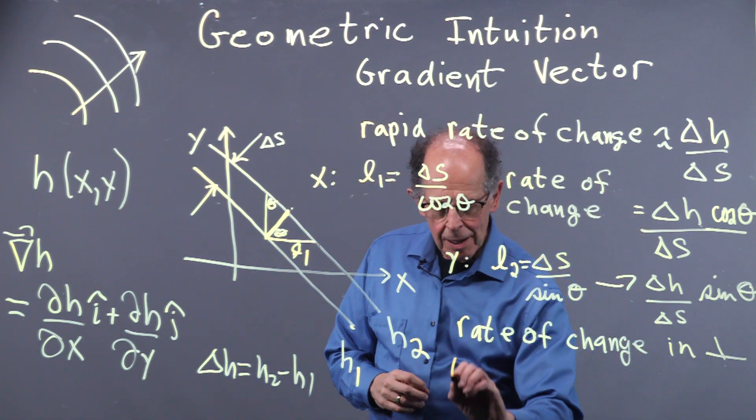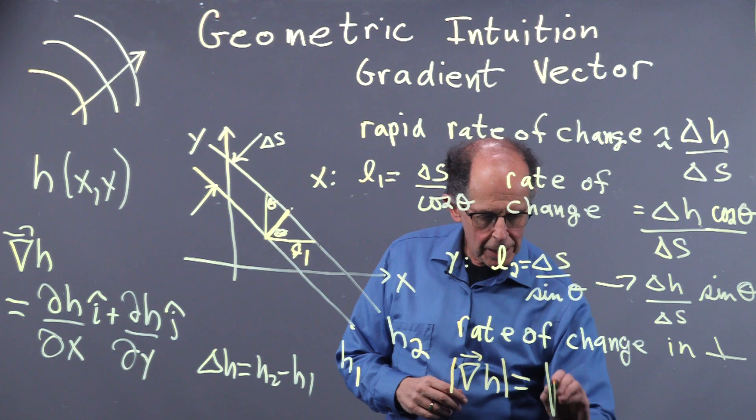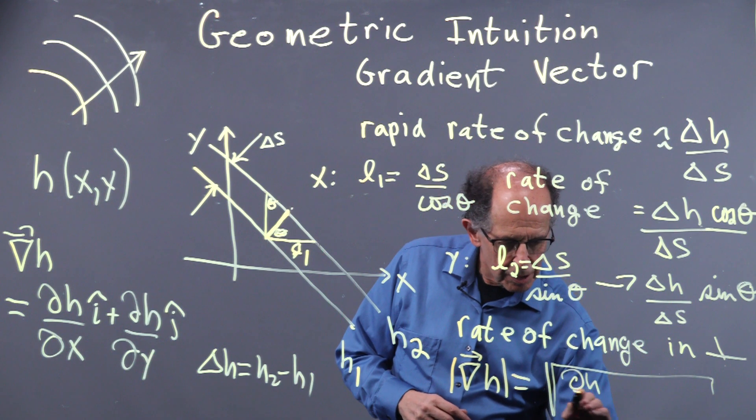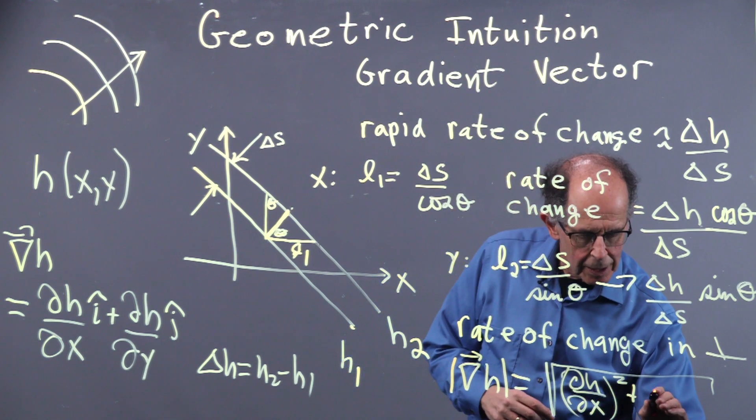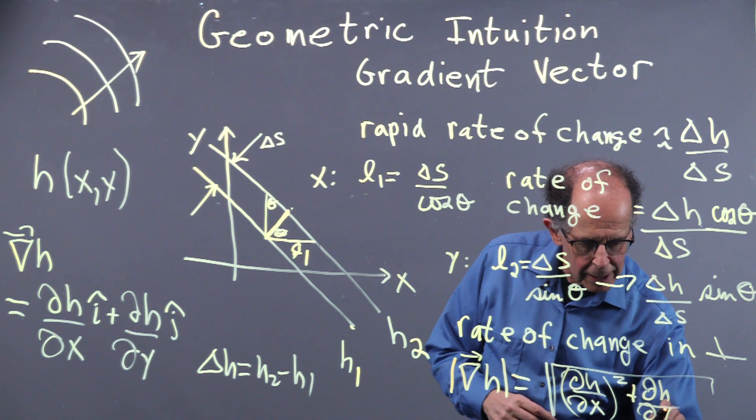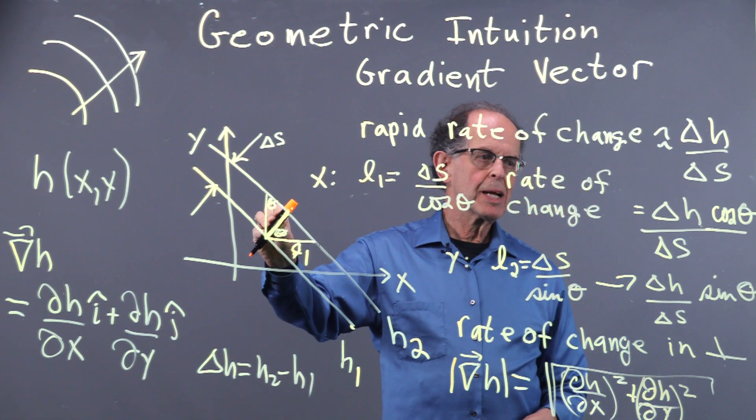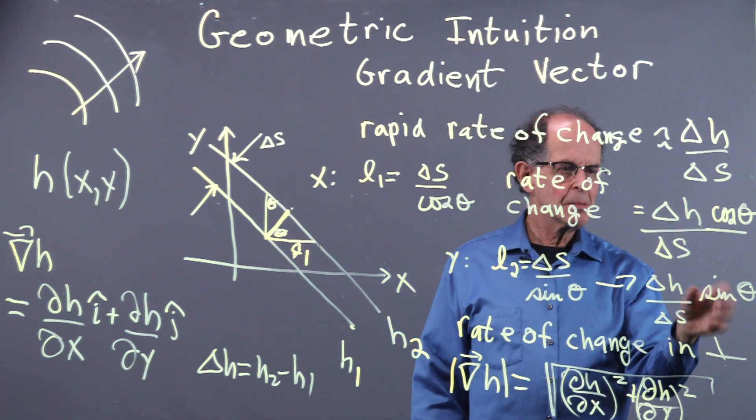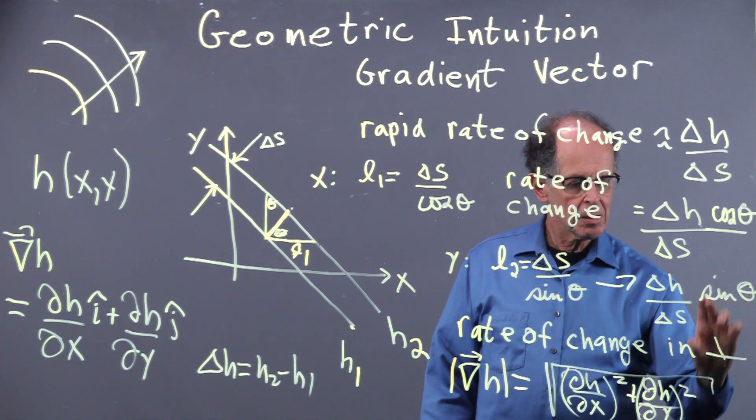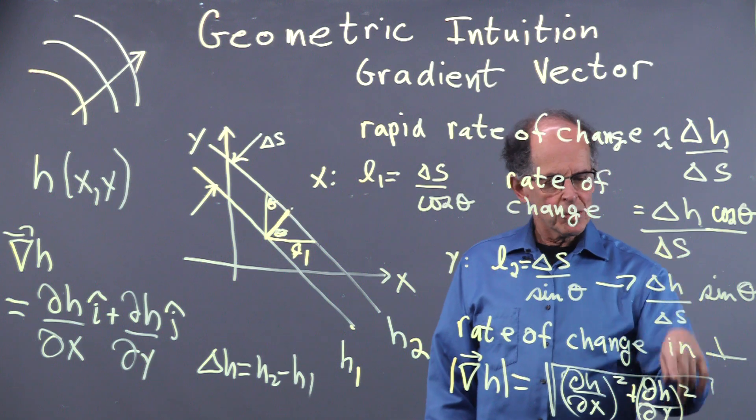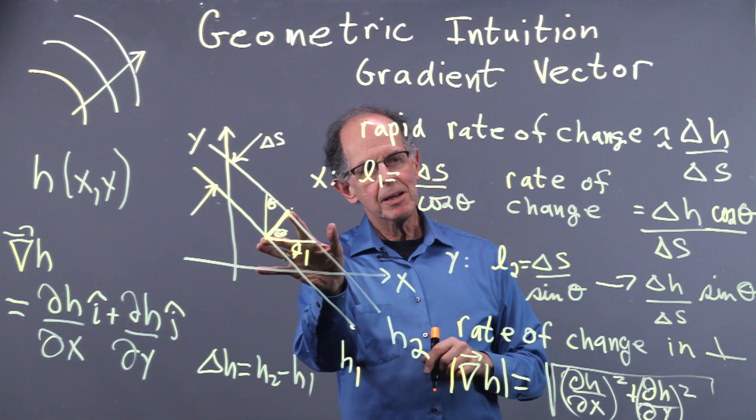So in summary, the magnitude of the gradient of H is equal to the square root of dH by dx squared, plus dH by dy squared, and we saw that that's the rate of change in the perpendicular direction. We've given a geometrical argument because this term here would correspond to dH by dx. This term here corresponds to dH by dy. Square them, add them up, and square root, and you get exactly that, which is the fastest rate of ascent.